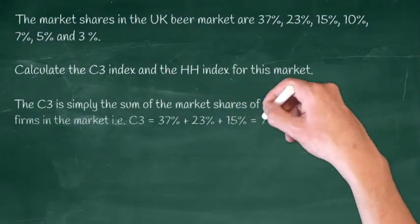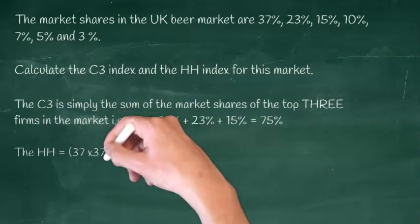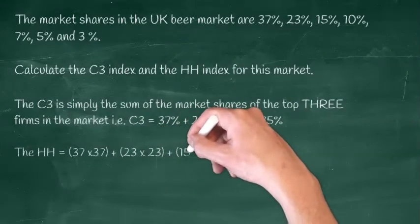For the Herfindahl, you need to take the square of each firm's market share and add them up. You get this time 2,306. What do these figures tell you?